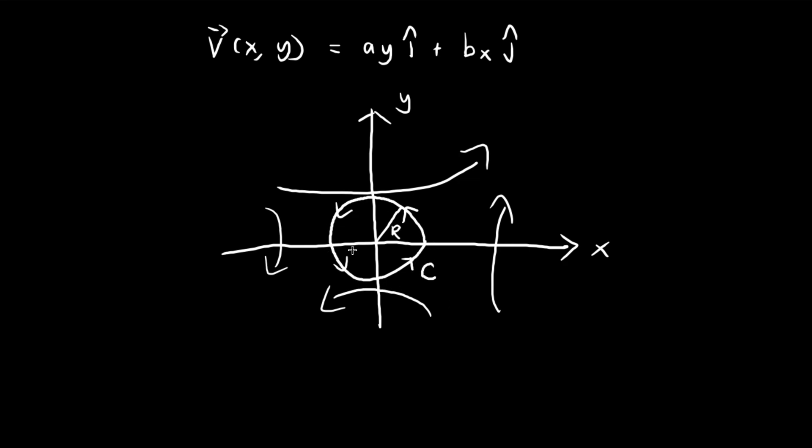So in order to verify Stokes' theorem, let's first do the line integral. We're going to take the vector field and dot this with a tiny piece of the path, and then integrate around this circle. In this video, I'm going to focus on the line integral. In the next video, I'm going to do the double integral. We will see that we'll get the same answer, as we expect from Stokes' theorem.